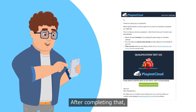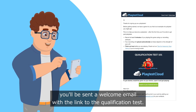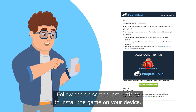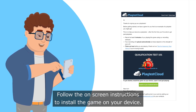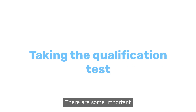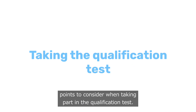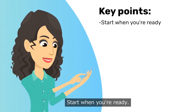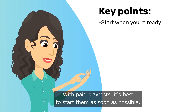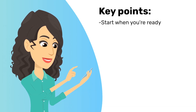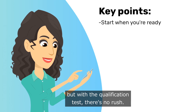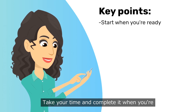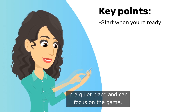After completing that you'll be sent a welcome email with the link to the qualification test. Follow the on-screen instructions to install the game on your device. There are some important points to consider when taking part in the qualification test. Start when you're ready — with paid playtests it's best to start them as soon as possible, but with the qualification test there's no rush. Take your time and complete it when you're in a quiet place and can focus on the game.